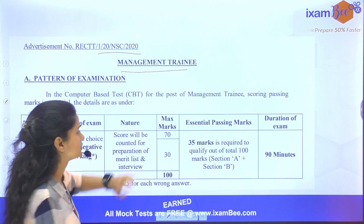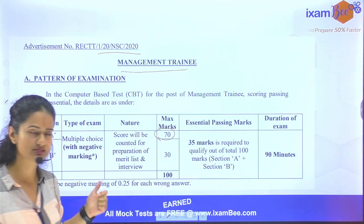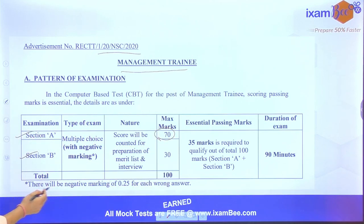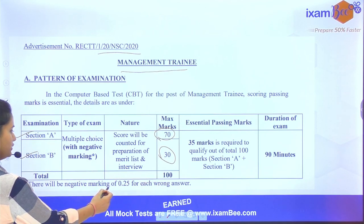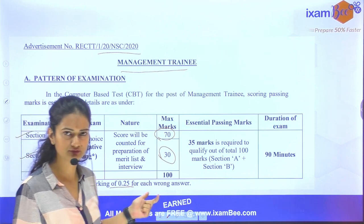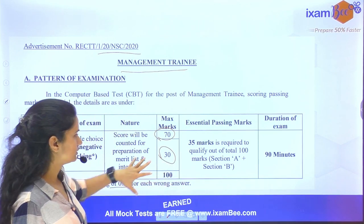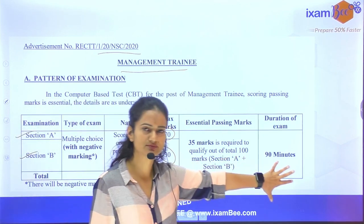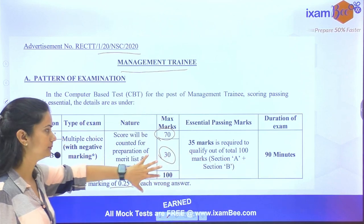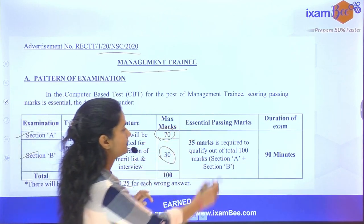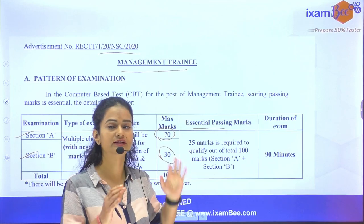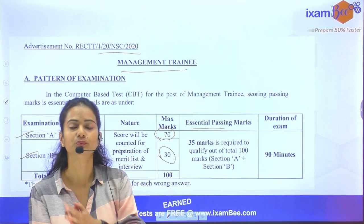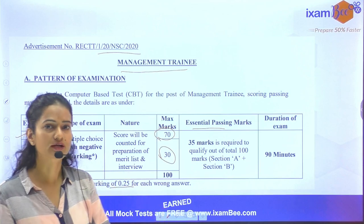Section A has 70 questions and Section B has 30 questions, 1 mark for each correct answer and 0.25 negative marking for wrong answers. Total of 100 questions to be completed in 90 minutes. The essential passing marks are at least 35 out of 100 in the written examination to qualify and be eligible for the interview.